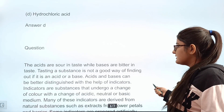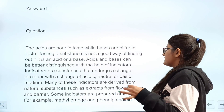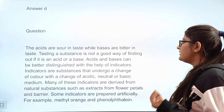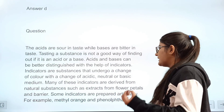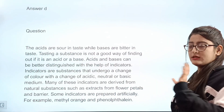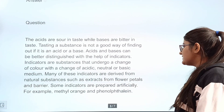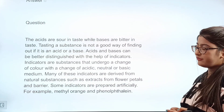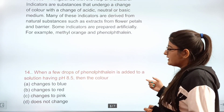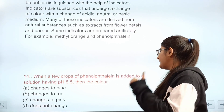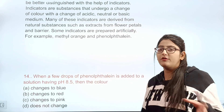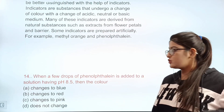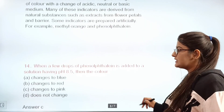Question 14: Acids are sour in taste while bases are bitter — testing a substance by taste is not a good way. Acids and bases can be distinguished using indicators, which are substances that change color in acidic, neutral, or basic medium. Many indicators are derived from natural substances like flower petals; others like methyl orange and phenolphthalein are prepared artificially. When a few drops of phenolphthalein are added to a solution of pH 8.5, the color changes to pink. Correct answer: C.